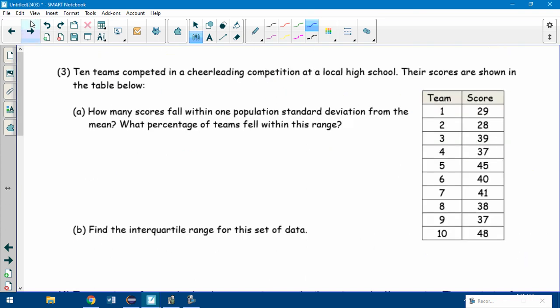Last page. Number three doesn't have anything to do with simulations, but it's a kind of tricky question and I'll show you why. Ten teams competed in a cheerleading competition at a local high school. Their scores are shown in the table below. How many scores fall within one population standard deviation from the mean? What percentage of teams fell within this range? So we've got to figure out the standard deviation and the mean. So how do I usually do that? One variable stats. Now this is where it's tricky. Look at the table. What are you going to type into your calculator? You're not going to type in L1 or L2. The team number isn't a statistic. It's just a way to label them. So they're kind of misleading you by showing you a table like this. This is not a frequency table.